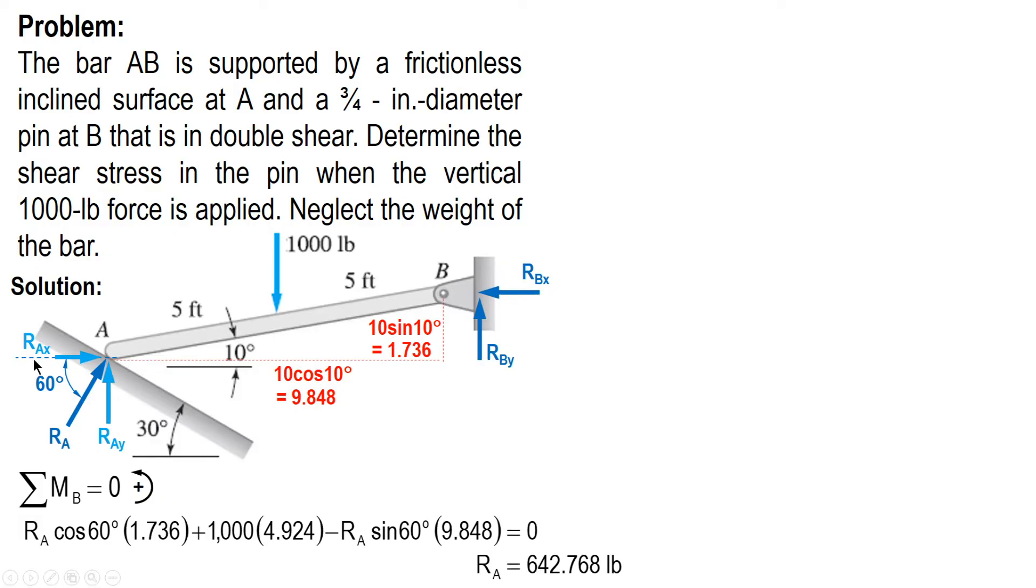After this, we use the other equilibrium conditions to solve for RBx and RBy. Summing up horizontal forces, we only have two: RAx and RBx. This is 642.768 cosine 60 minus RBx equals zero. So RBx is 321.384 pounds.